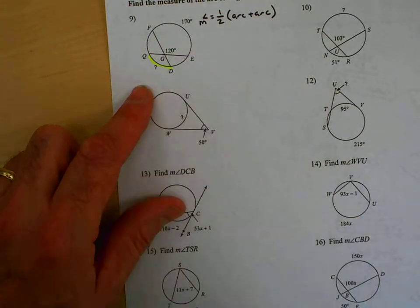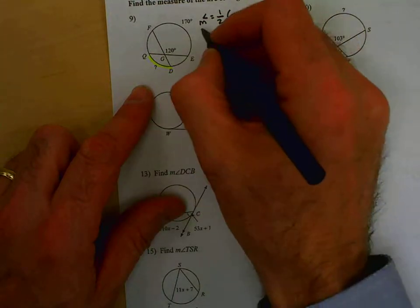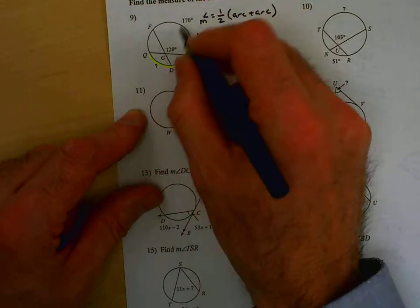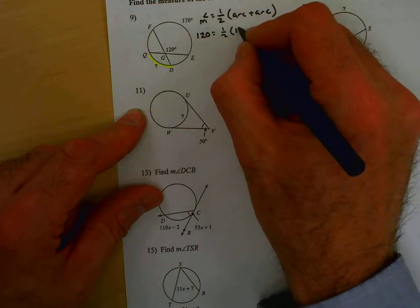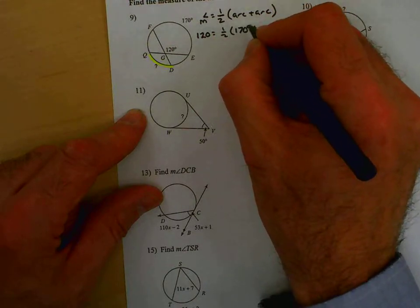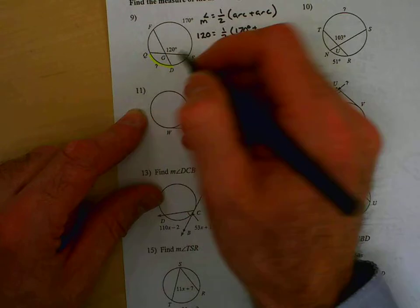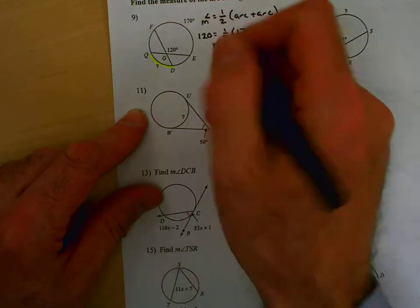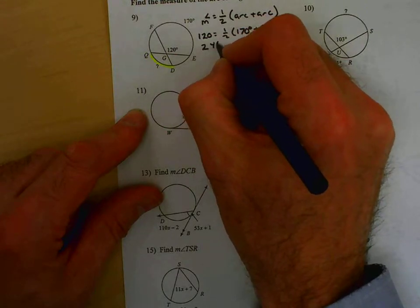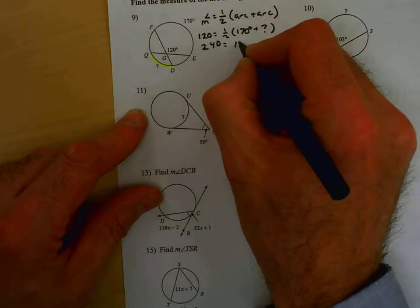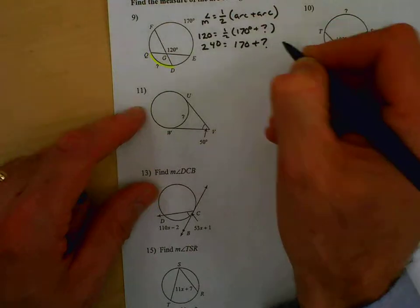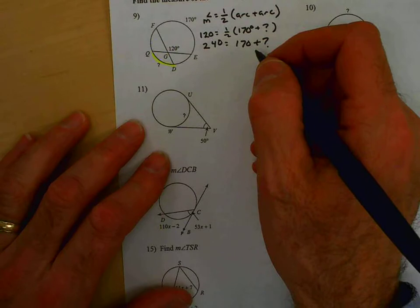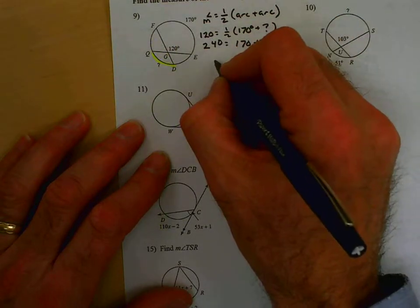That is, the angle is 120. We get one half arc. The intercepted arc is 170. And the vertical angles intercepted arc is the question mark. Double both sides. You get 240 equals 170 plus the question mark. And in this case, we subtract 170 from both sides. And we should get 70.